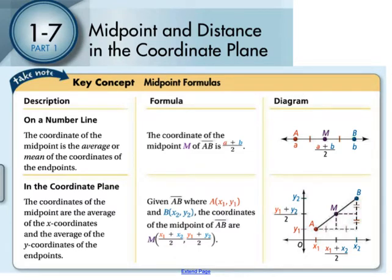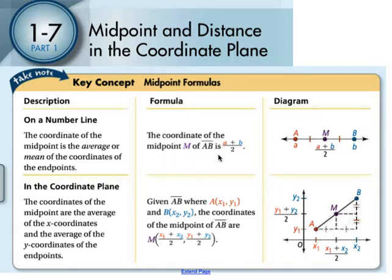Today we are going to work on finding the midpoint in the coordinate plane — both on a number line and in the xy coordinate plane. On a number line, the midpoint M of any segment is found by adding the two endpoints together and dividing by 2. It's just finding the average or the mean of the two endpoints.